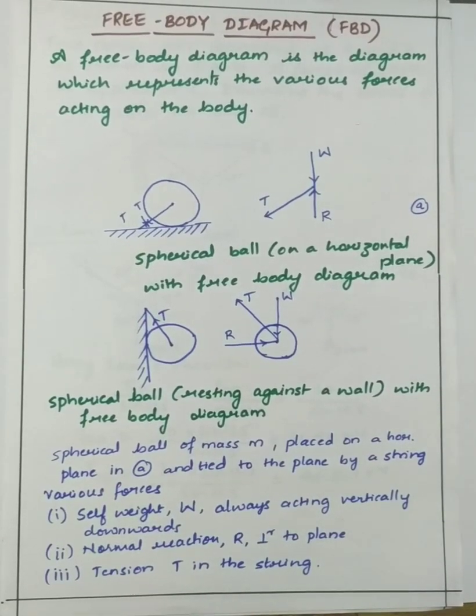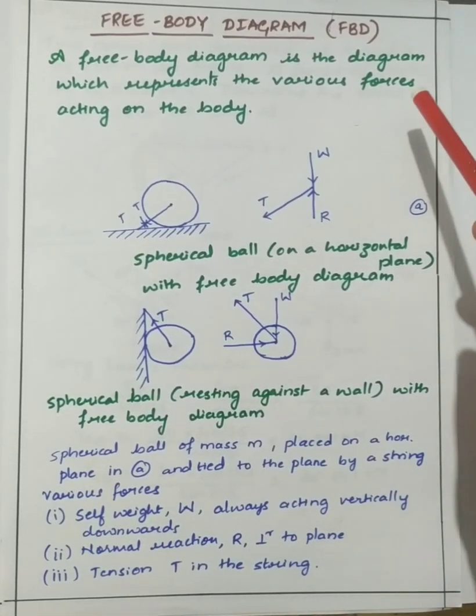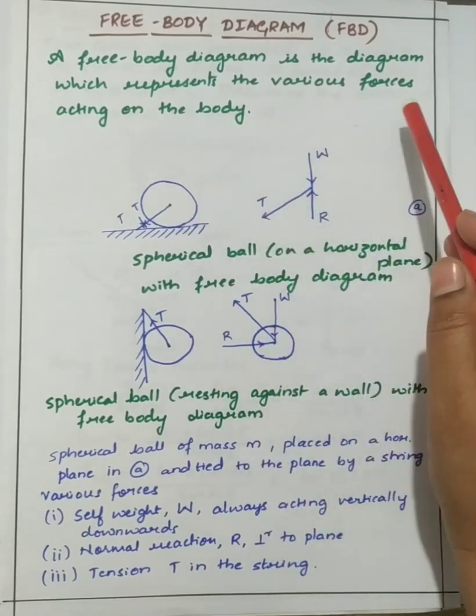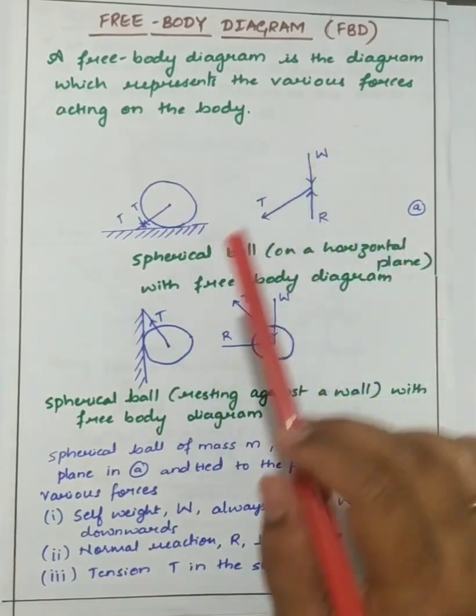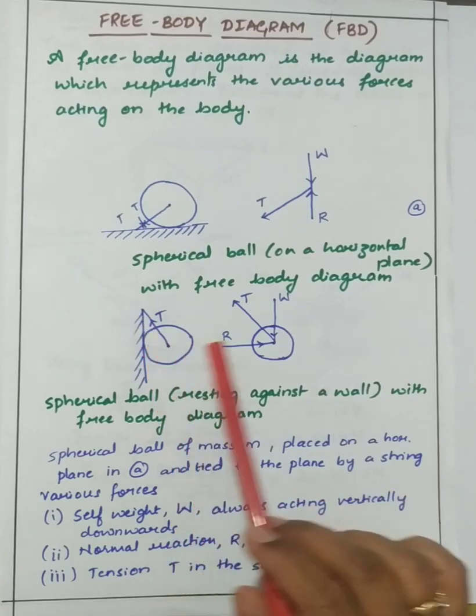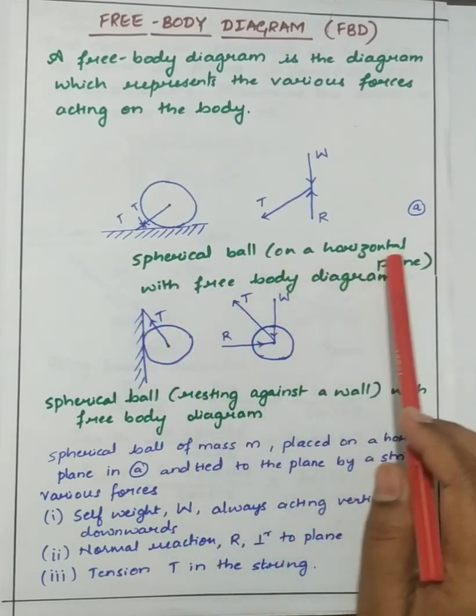Today let us understand what is free body diagram. A free body diagram is the diagram which represents the various forces acting on the body. Here I have considered a spherical ball - one resting on a horizontal plane.